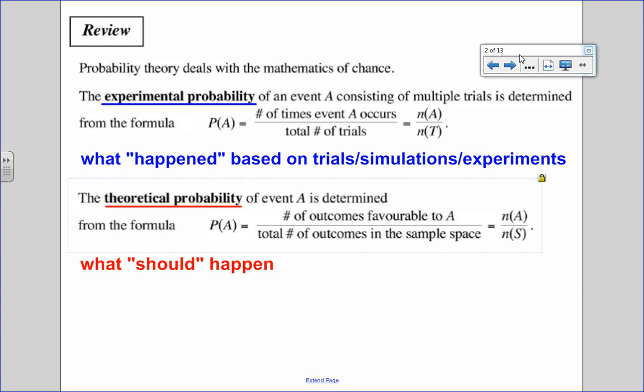It is a calculated probability. So it's what should happen. It doesn't mean that, for example, if I have a one out of two chance of getting tails every time I flip a coin, it will always happen that way. It's just as the experiments increase in number, it will eventually approach the theoretical probability.